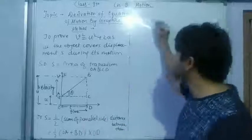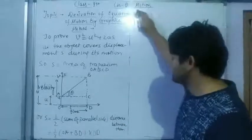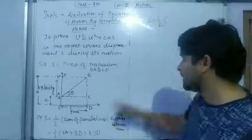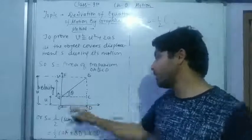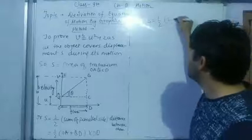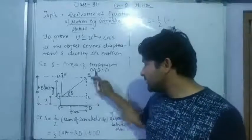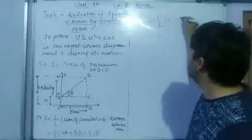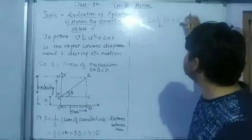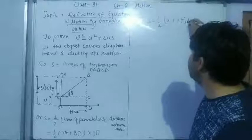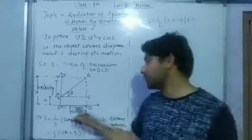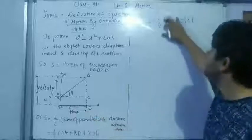or we may write this 1/2, s equals to 1/2, this OA is, OA quantity is U plus this BD, this BD is equal to again OE. Multiply with time T, this OD is equal to time T. Now what?